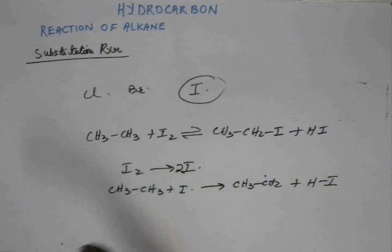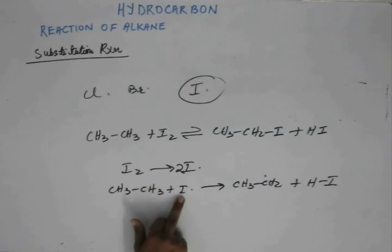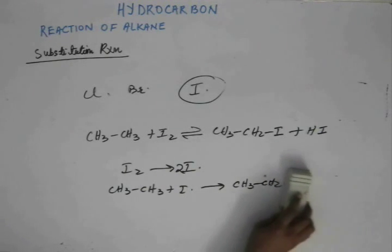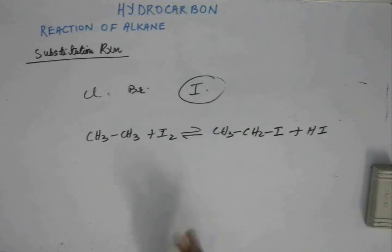So the tendency for the reaction to go ahead would be less. So that makes the reaction reversible. Rather, it comes back and gives you back the iodine free radical. Because iodine being very less electronegative is not so damn unstable to bear that deficiency of electron. It can stay there. So iodine has a problem that reaction becomes reversible. It comes back.